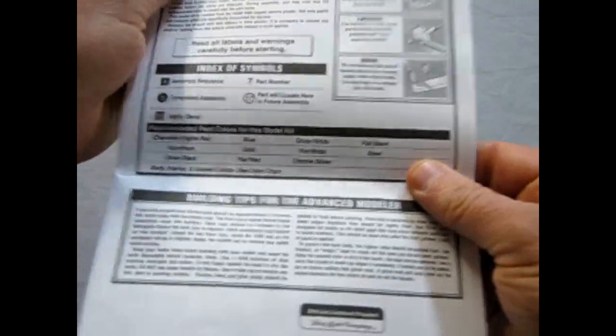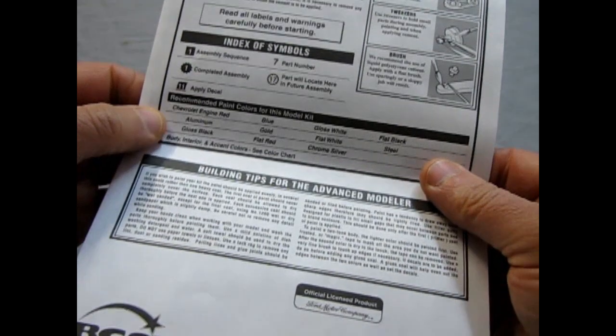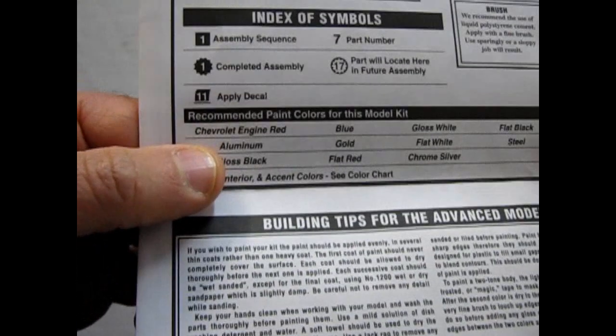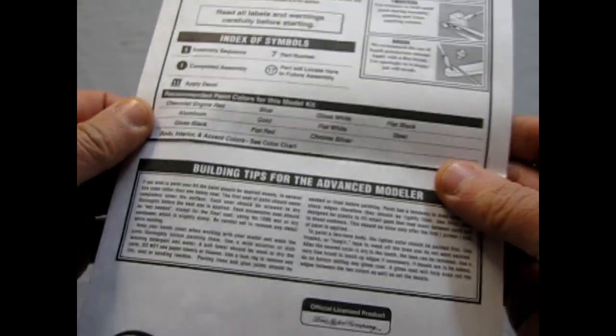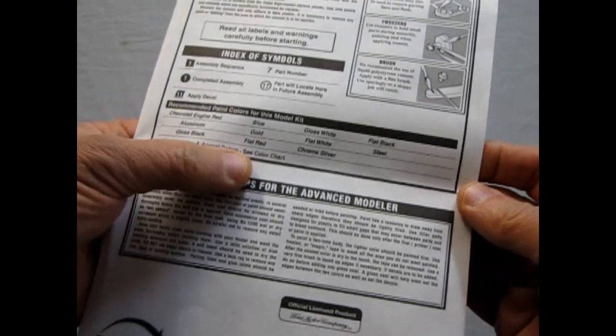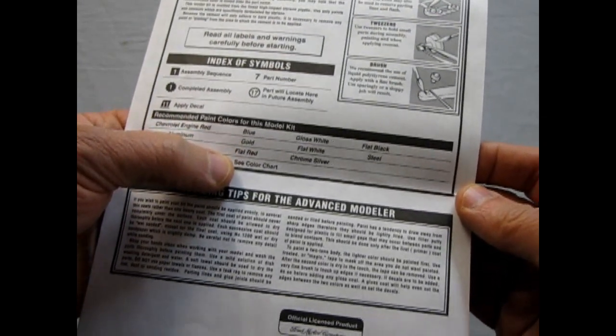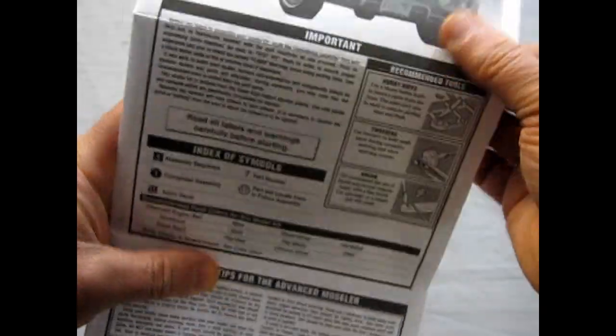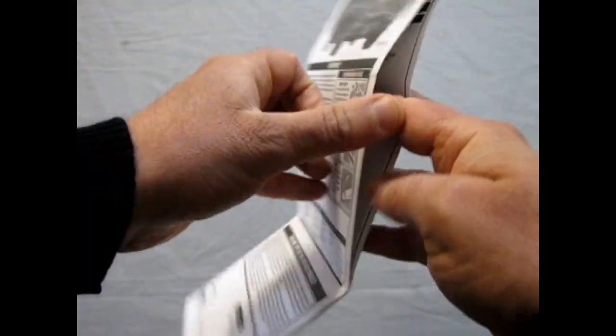First we have our index of symbols. And the recommended paint colors for this model. Look at that. Chevrolet engine red. Okay, on a Ford? Anyway, aluminum, gloss black, blue, gold, flat red, gloss white, flat white, chrome silver, flat black, and steel. Okay,